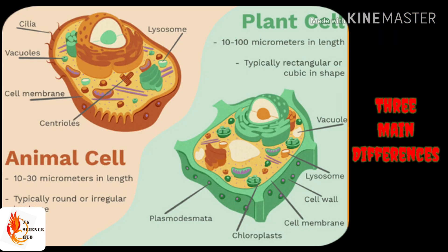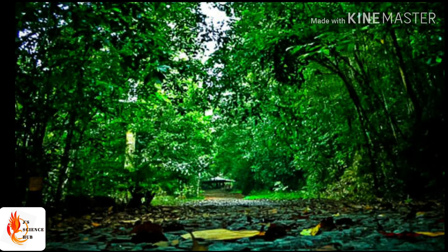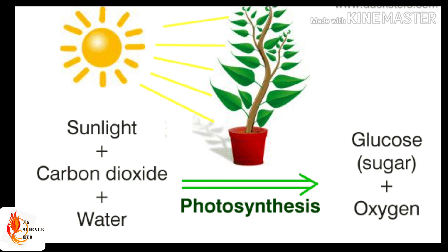In this video we are going to discuss only about the three main differences present between plants and animal cells. To find out the difference, the first question you should ask is what is the difference between plant and animals? Plants are the autotroph. We call it as a photo-autotroph because it absorbs the solar energy for producing the food.